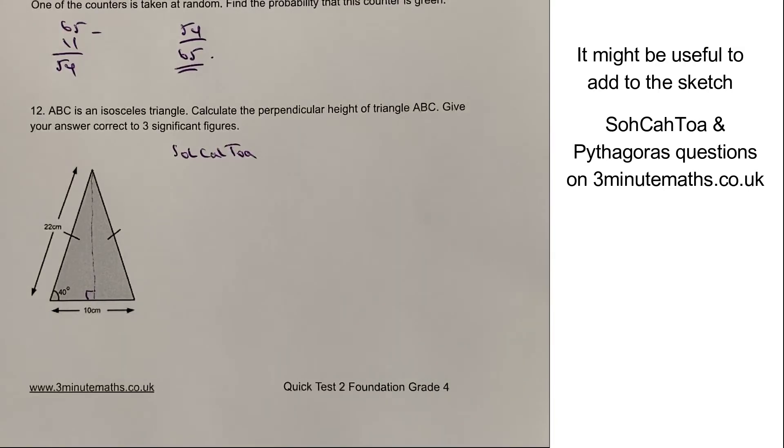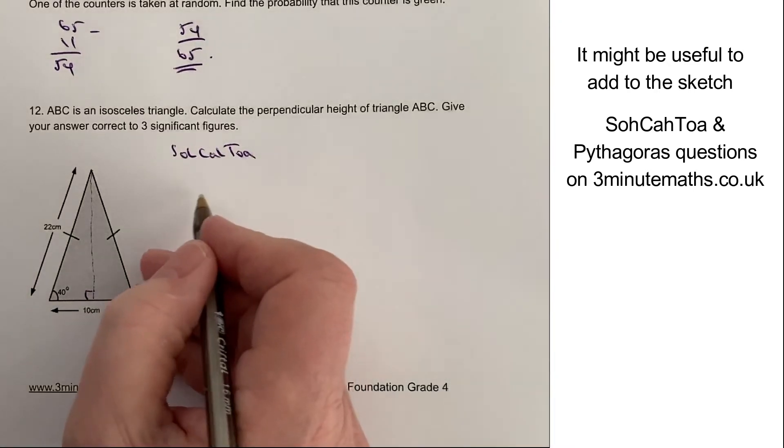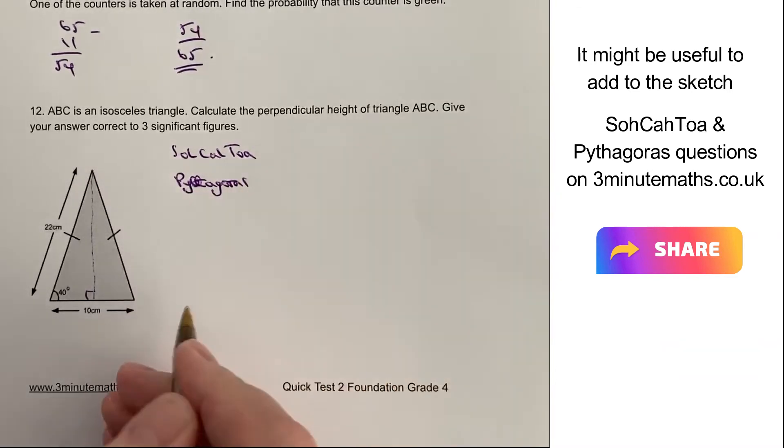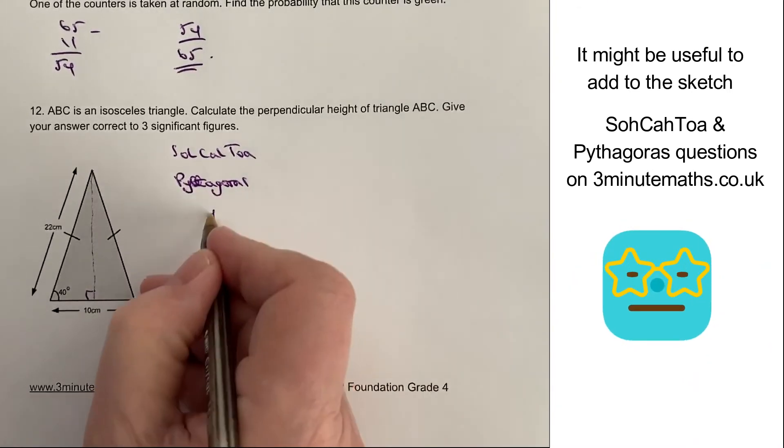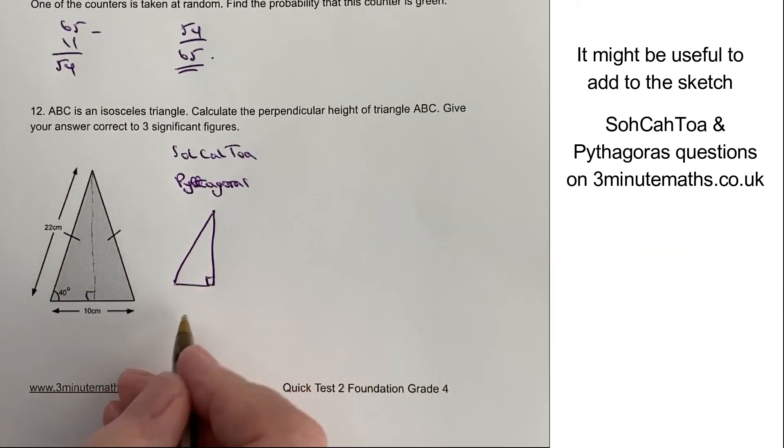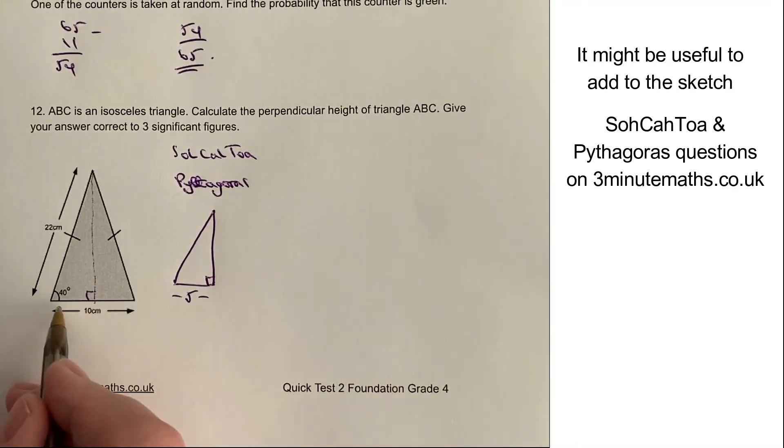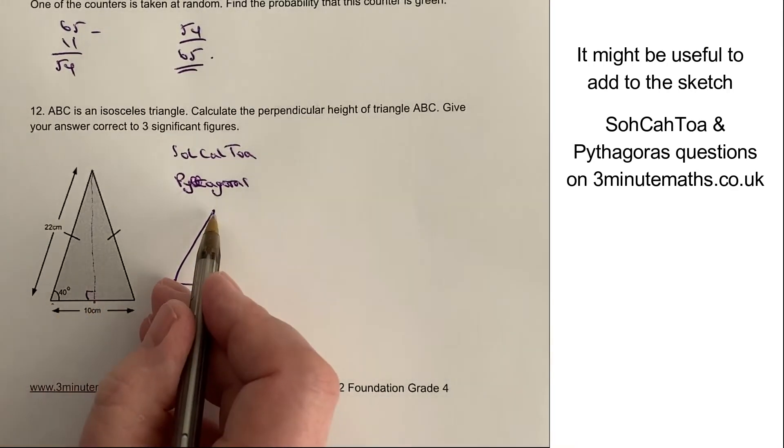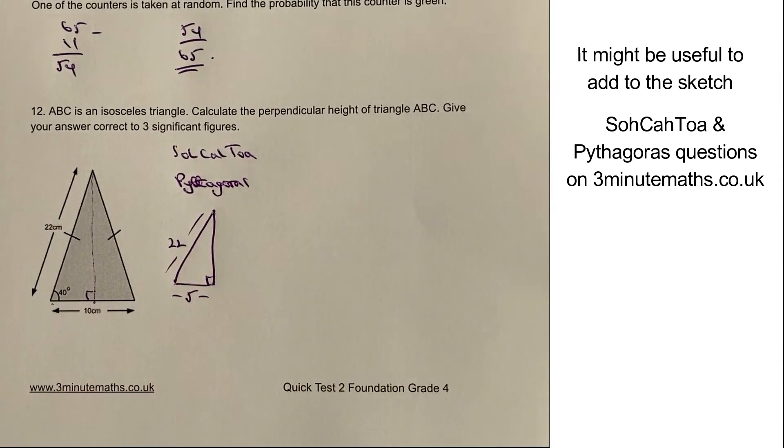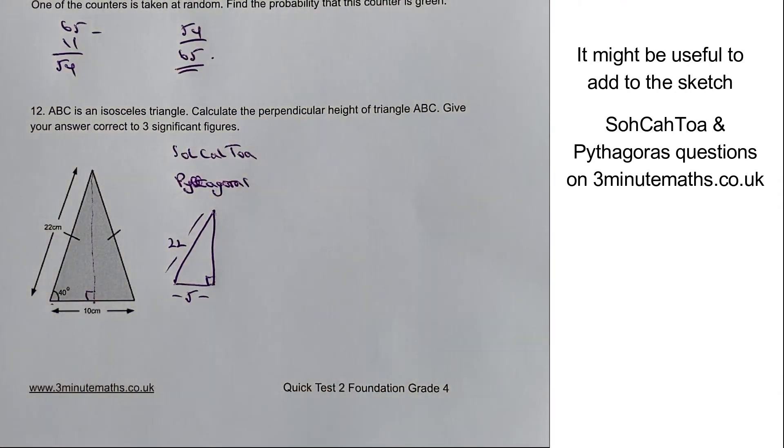perhaps a simpler way of doing it is to use Pythagoras to basically say that if we have Pythagoras, I'll just make a note there. You'd get the same answer either way, whichever system you used or whichever method you use. But basically, we've got a base here of 5 centimetres, because it's going to be half of this length here. And we've got a height here, or a slant height here, of 22 centimetres. So what I can do is I can use that information as Pythagoras, and I can work out this height.